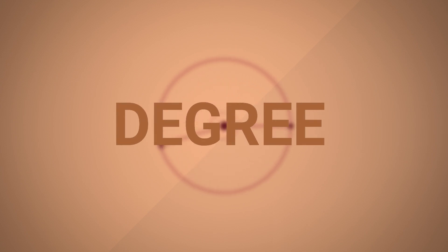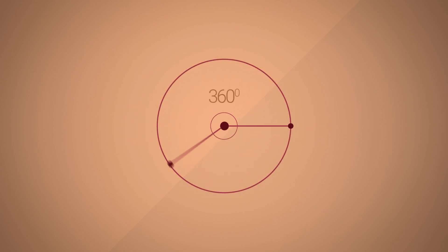The degree. We all know that a circle is 360 degrees. 360 seems like such an arbitrary number. It must come from somewhere, must mean something, right?